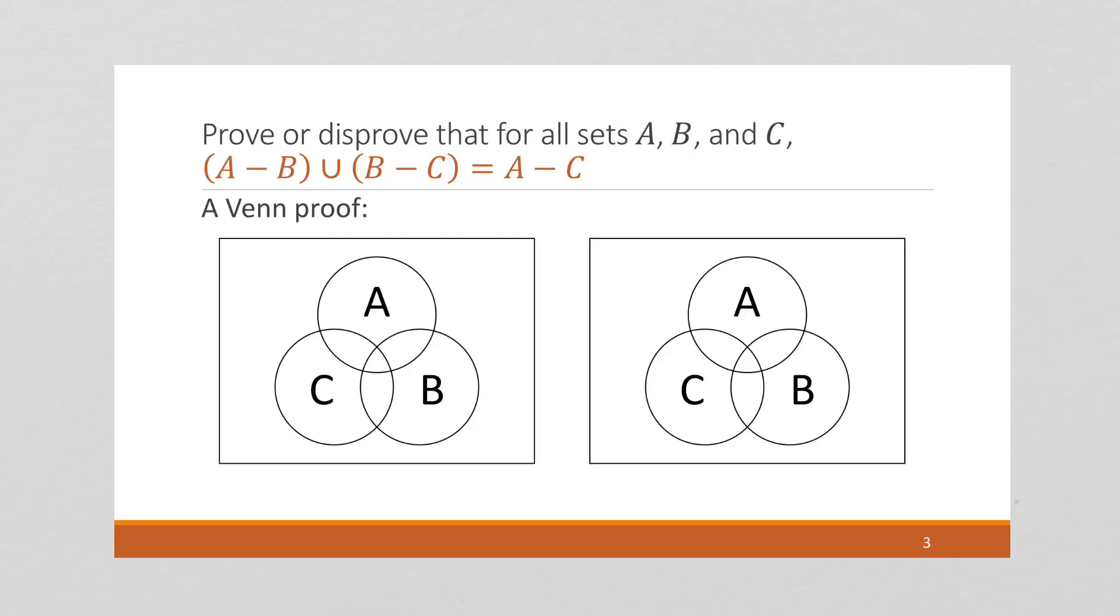I'm going to start with A minus B in this diagram. And that's everything in A that is not in B. So I'm going to shade in A here, but leave out whatever is in both A and B.